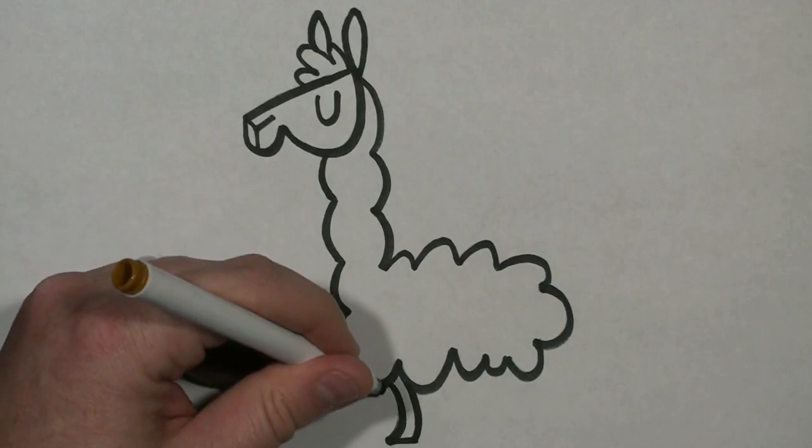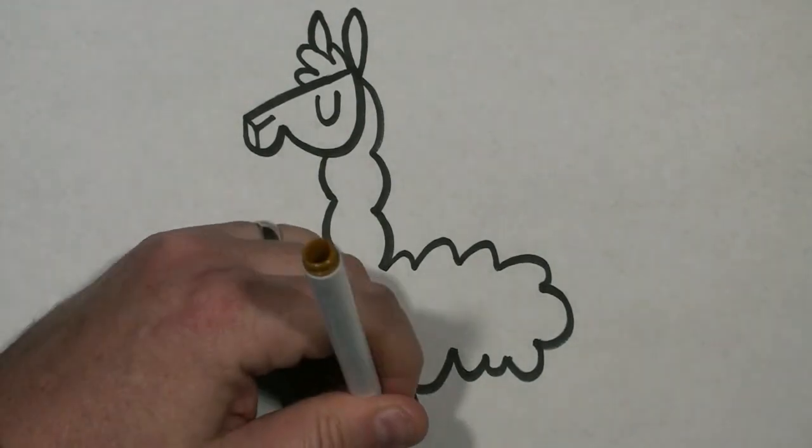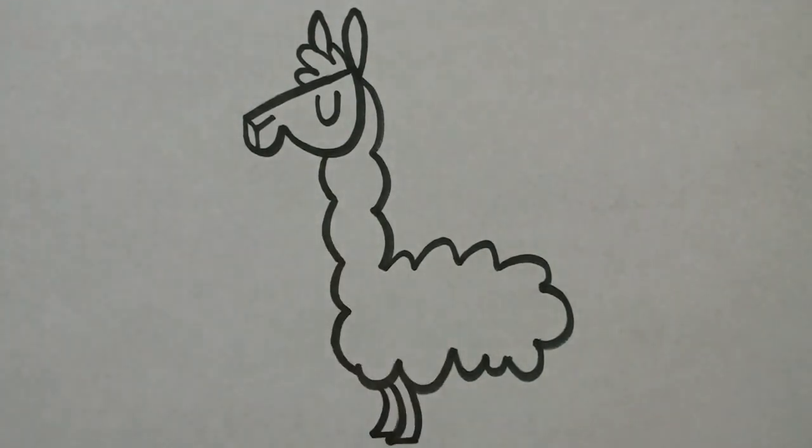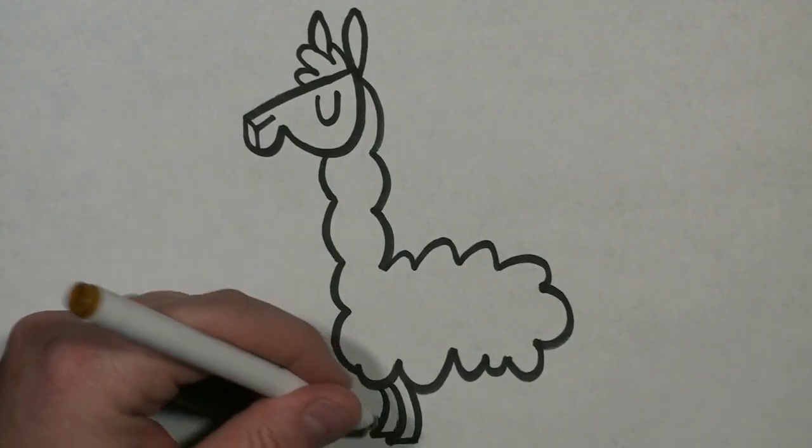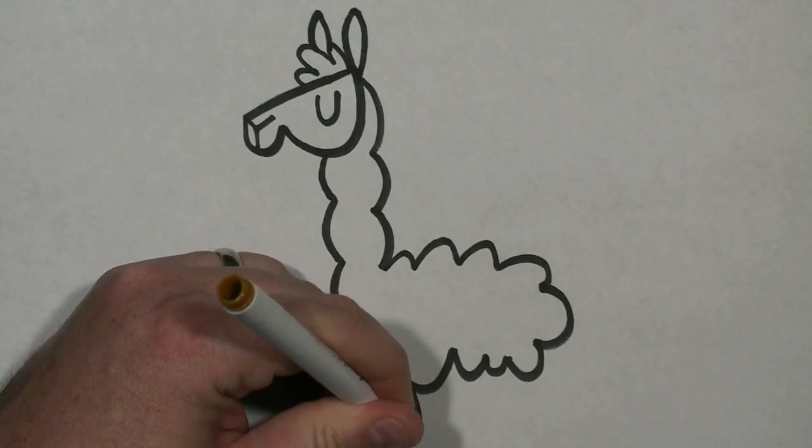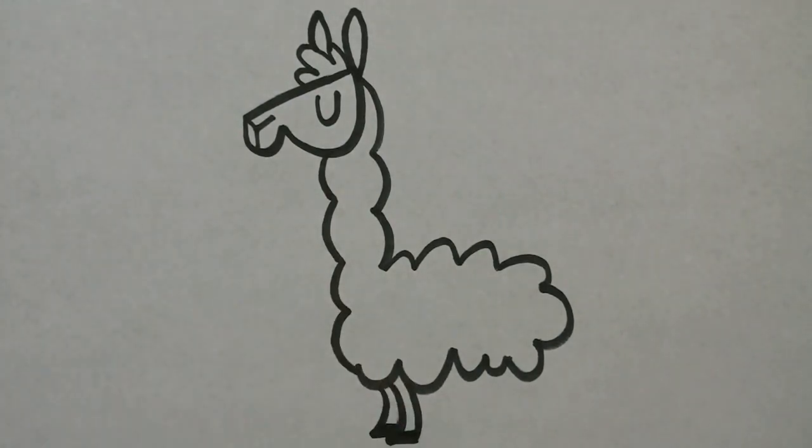Then on the left side I'm going to draw another curved line that goes down and just draw a line that connects it to that first leg. At the very bottom I'm just going to fill in a little bit to make the hoof.